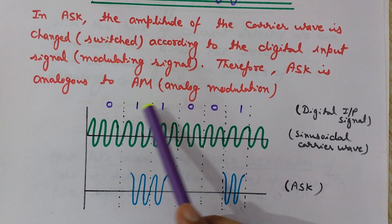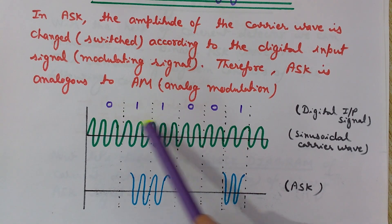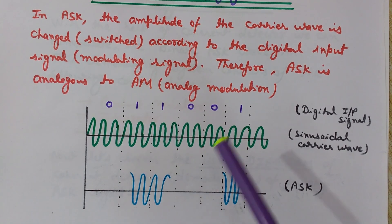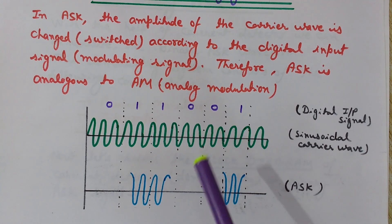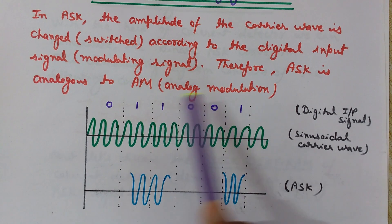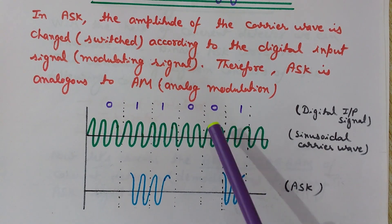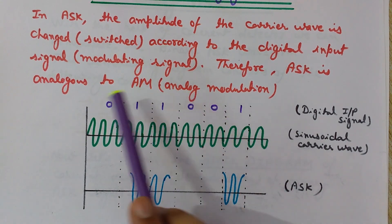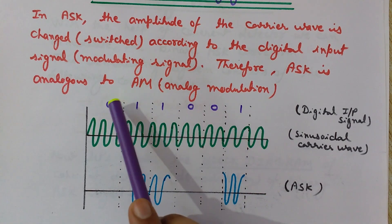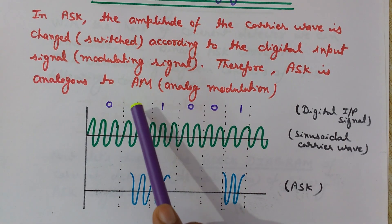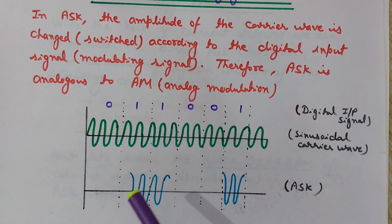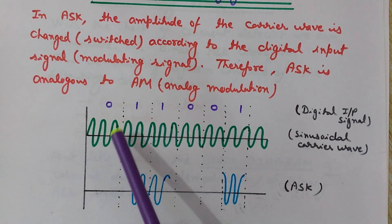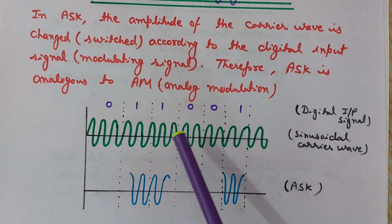Whenever we want to transmit 1, this continuous carrier wave is transmitted. At the places where it is 1, you can see this part has been transmitted. So you can easily understand that this is amplitude shift keying because as per the variations in the digital input, as it changes from 0 to 1 or 1 to 0, we are switching the sinusoidal carrier wave. This is amplitude shift keying.